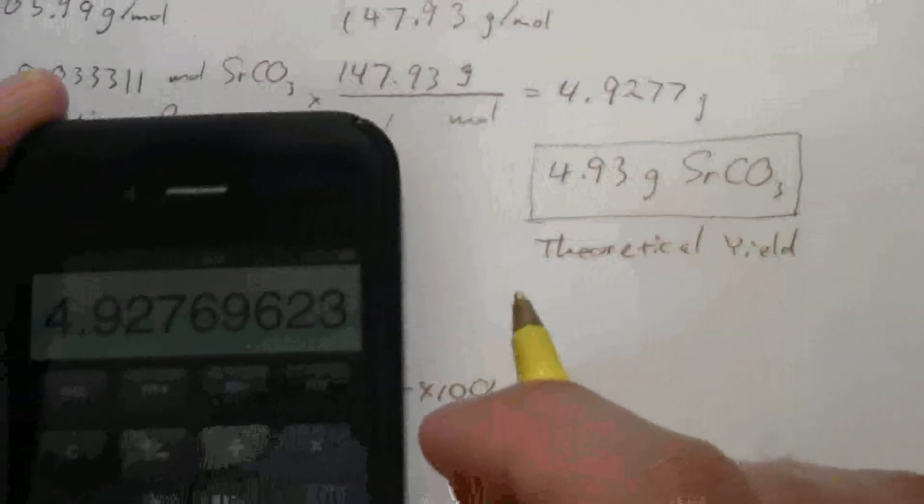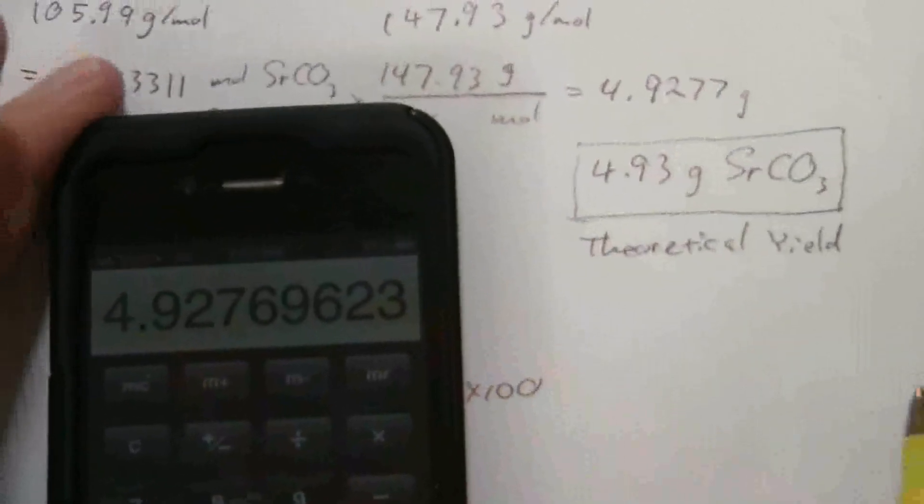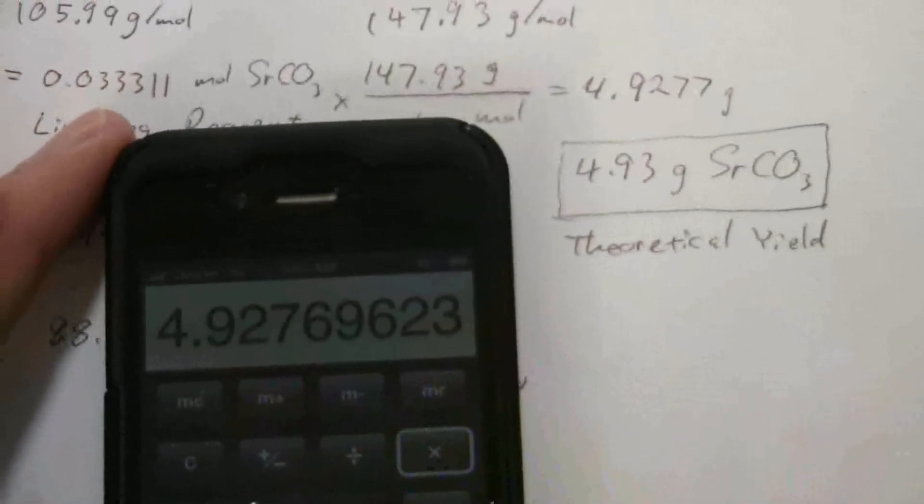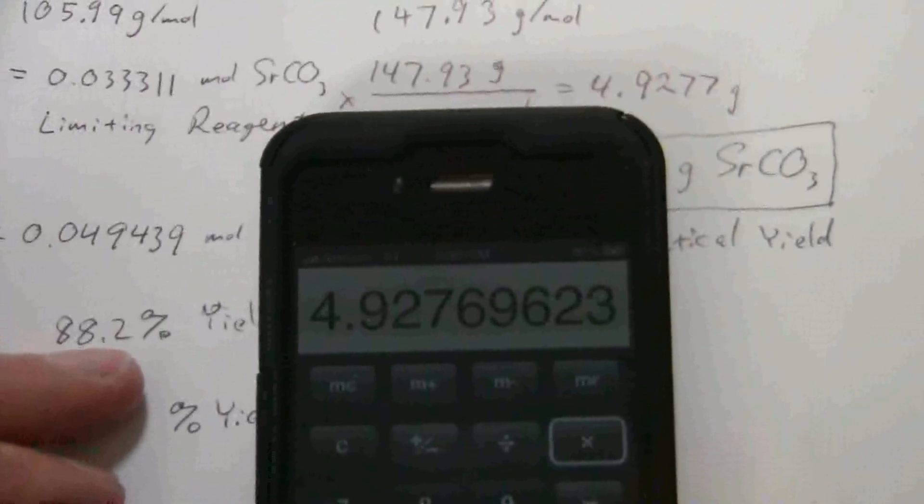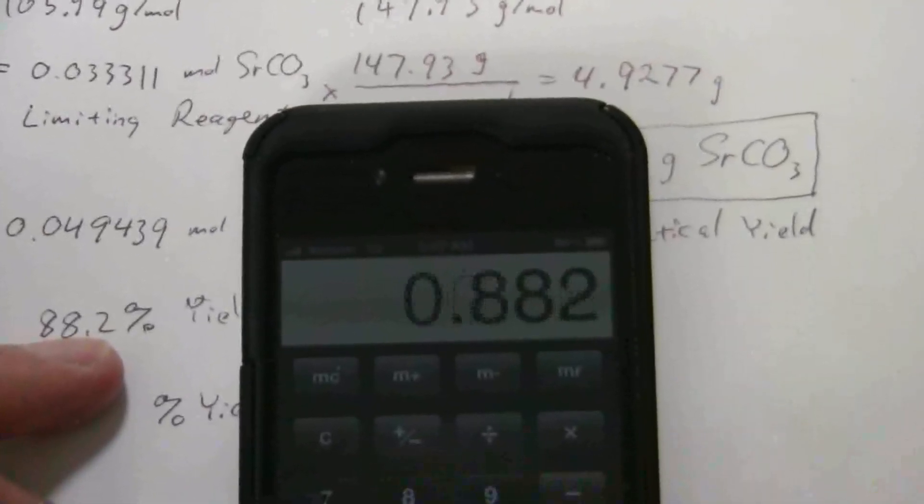I could just take that 4.93, and I'll just use the unrounded number, I still have it in my calculator, and we're going to multiply this by the 88.2%, and of course, we would convert that to a decimal, so it'll be 0.882.